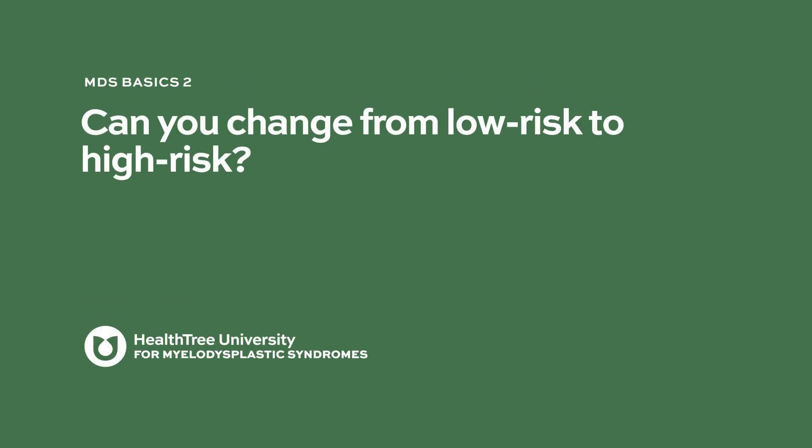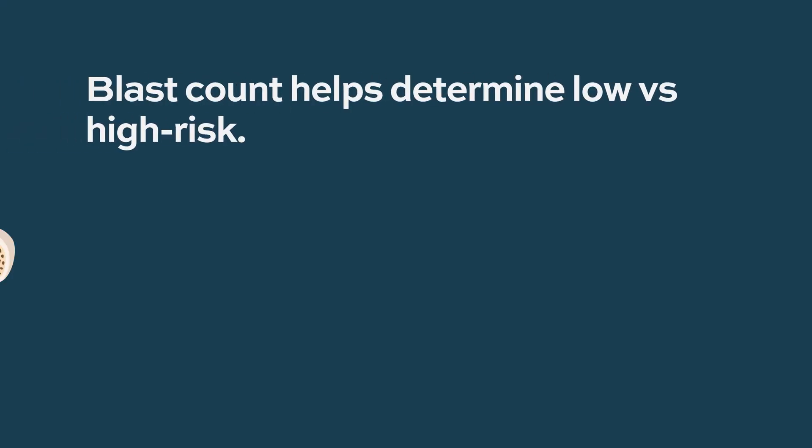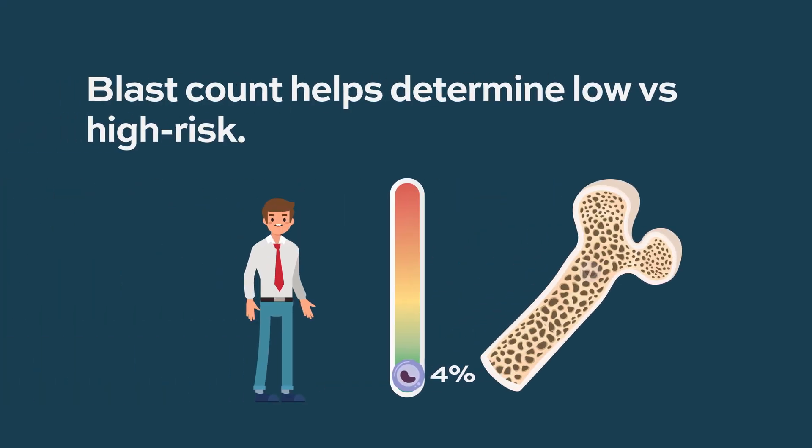Can you change from low risk to high risk? You can. You can progress over time from low risk to high risk, and the major feature we look at is going to be your blast count. If you start out with less than 5%, you're in the lowest category. If that blast count increases over time — gets to 10%, 15% — then you've now gone into a high risk situation.